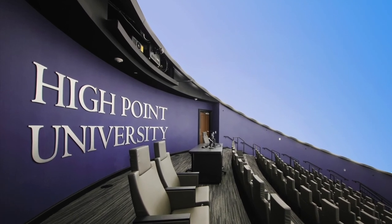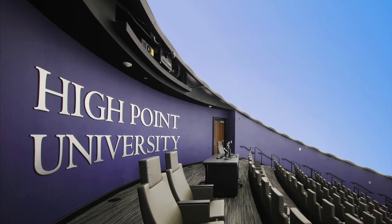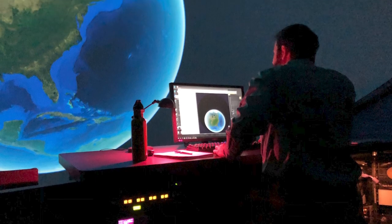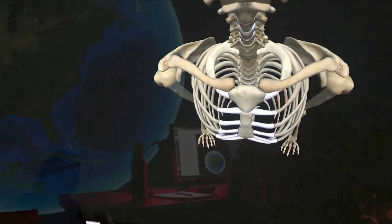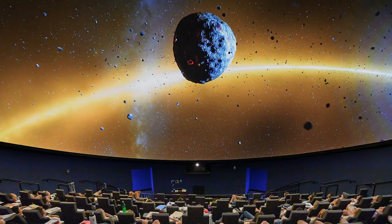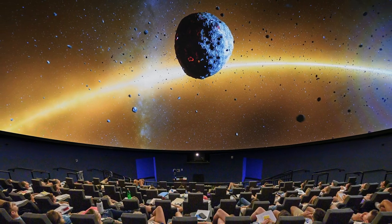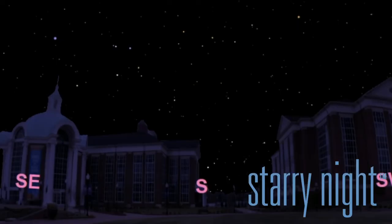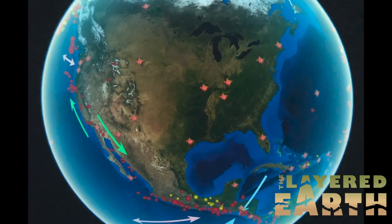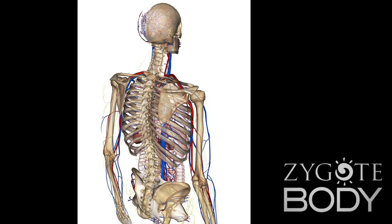Here at the Culp Planetarium we are more than just a space for astronomy. We've had lectures for environmental science and anatomy labs in our planetarium space and we're able to do this because we have three very distinct pieces of software. We have Starry Night for astronomy, we have the layered earth for earth science, and we have zygote body for anatomy.